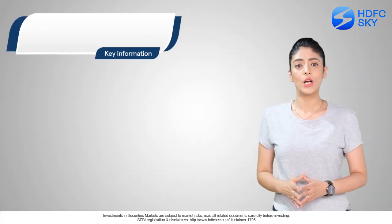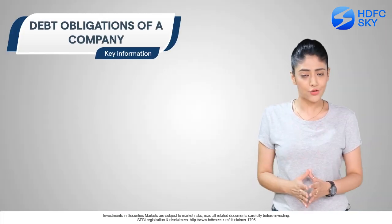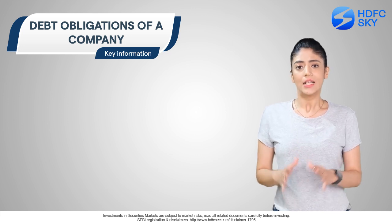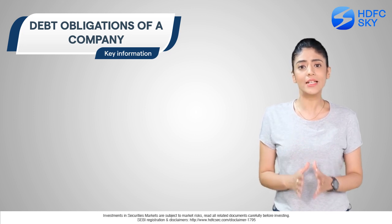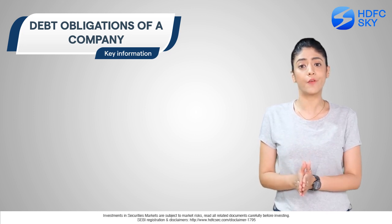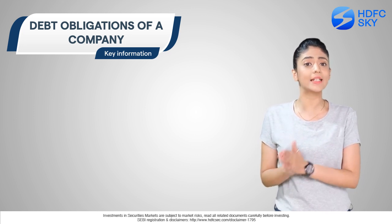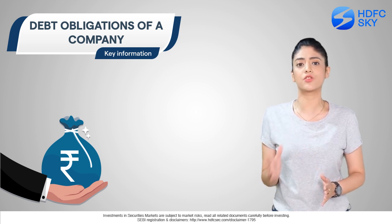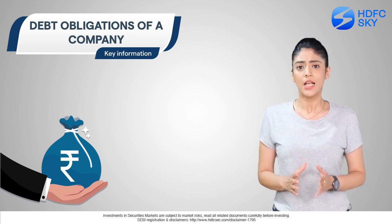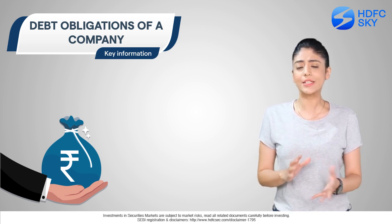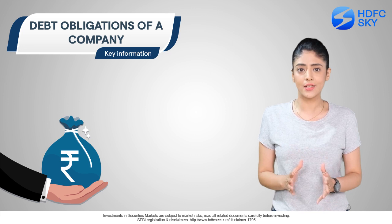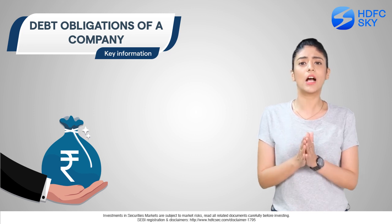We can also see which segments are outperforming and which are underperforming. Number four: debt obligations of a company. This is important as it can give us a better insight into the company's financial position, including its credit and liquidity risk, what its line of credit is, etc.